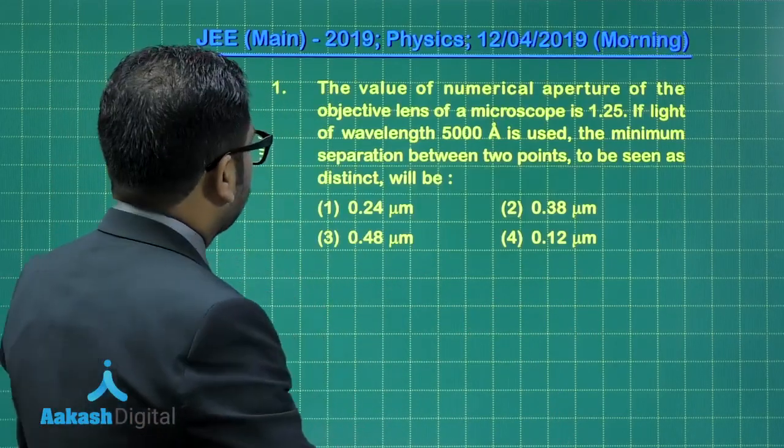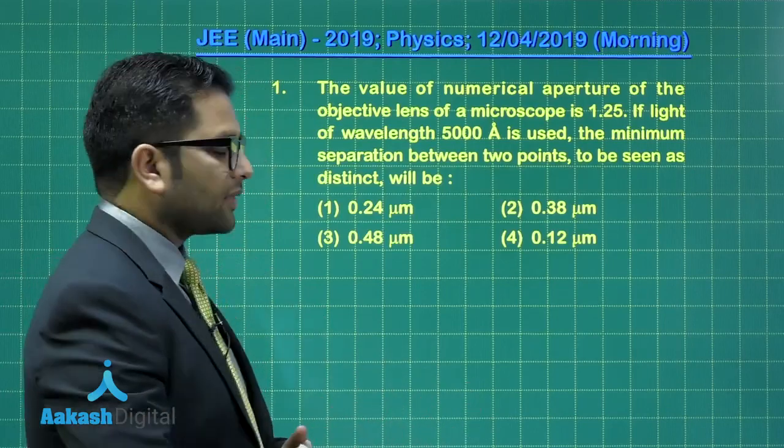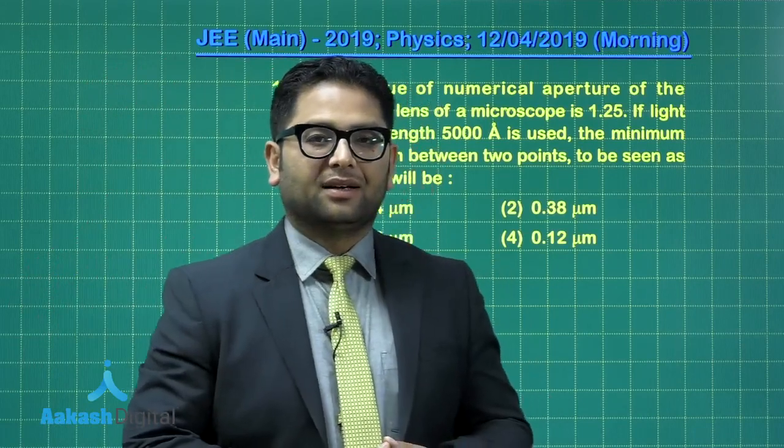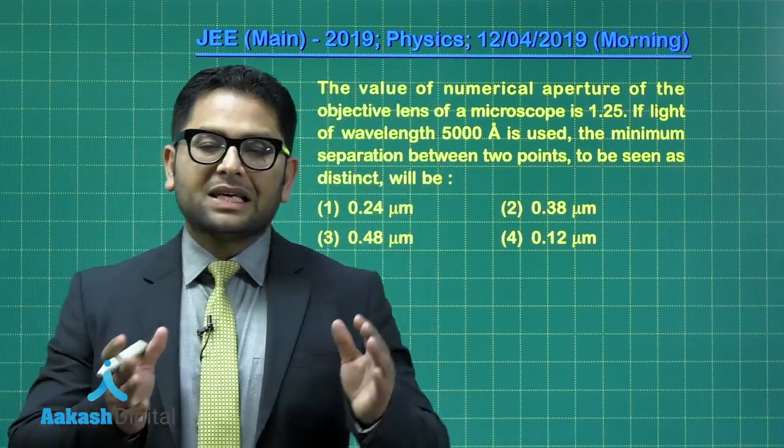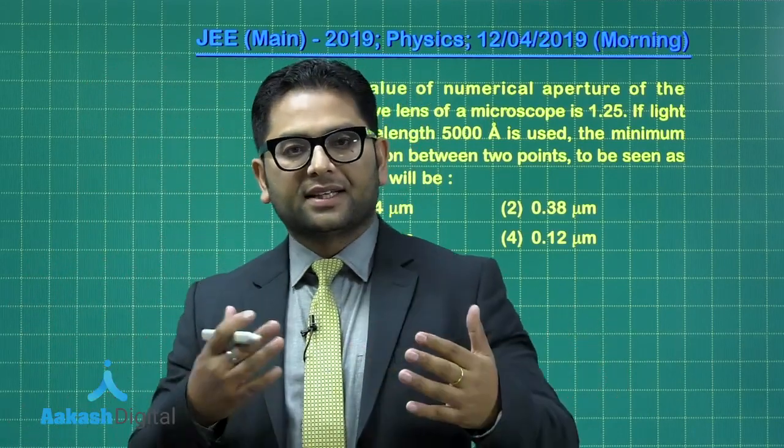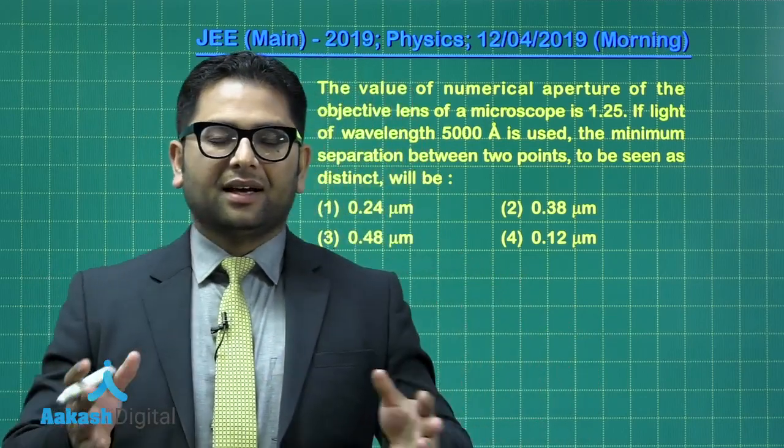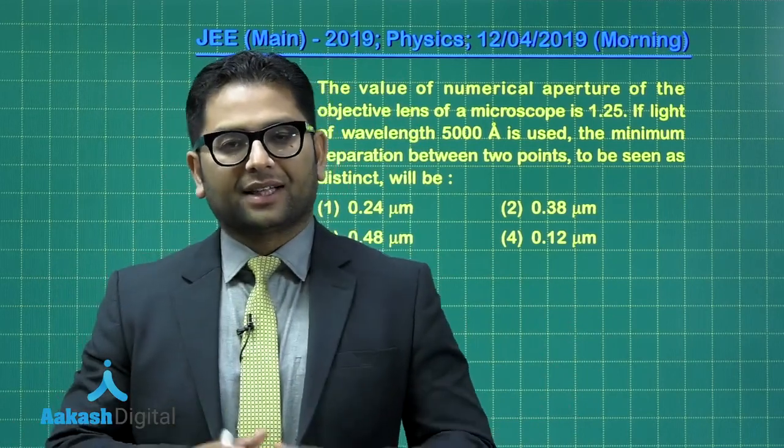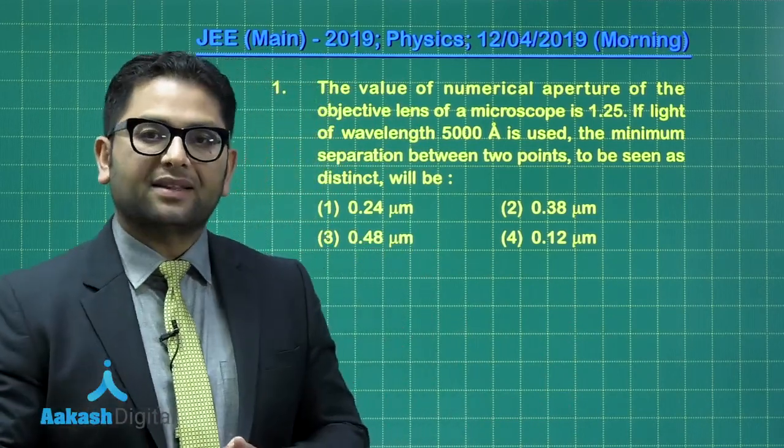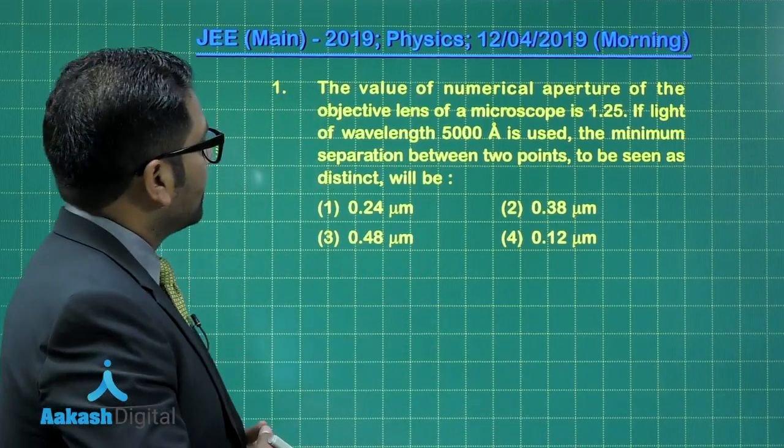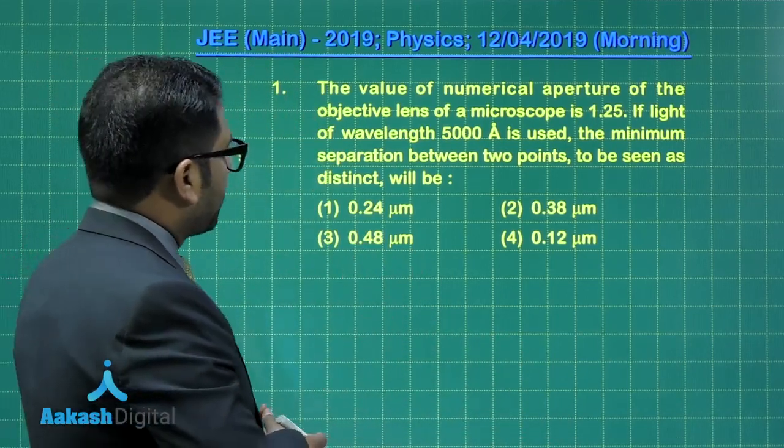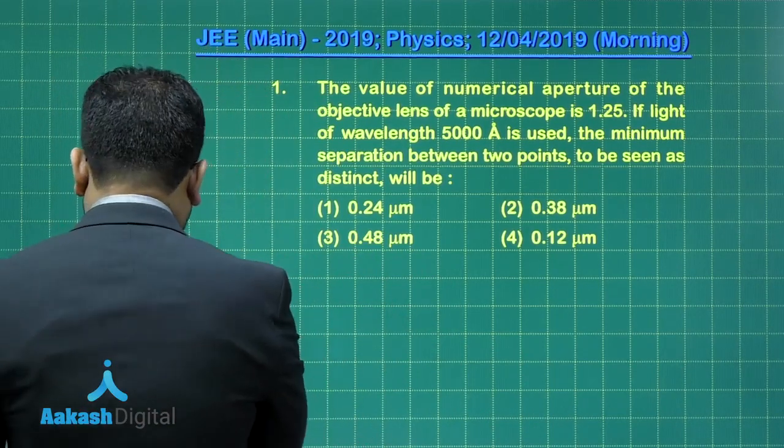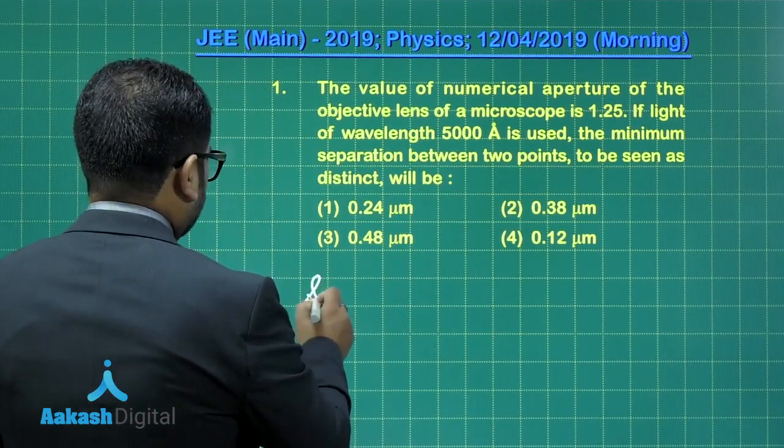To begin, the first question that I have here is from ray optics and something related to optical instruments. Any given topic which is related to experiment and devices, it's a nice suggestion to all the aspirants that you take those areas with extra attention. The value of numerical aperture of objective lens of a microscope is 1.25, that has been given.